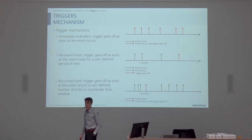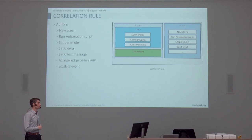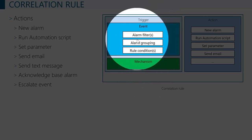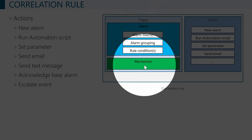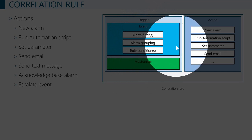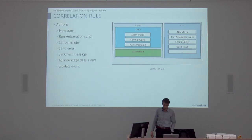On the right-hand side we define what needs to be executed: run an automation script, generate a new alarm, do a single set of a parameter, or send an email. You can combine multiple actions as well. That's it — a correlation rule is simply: when something happens and what needs to be done.